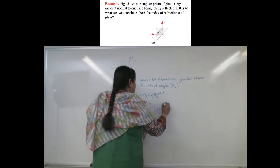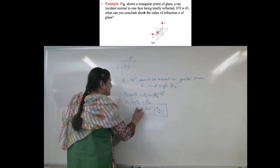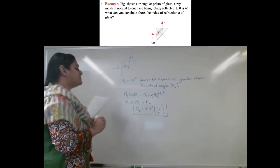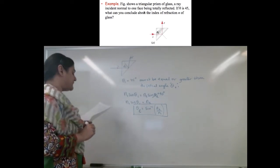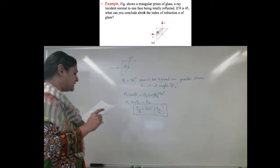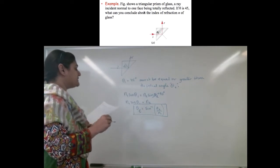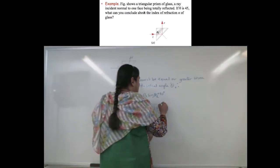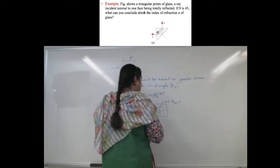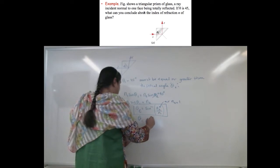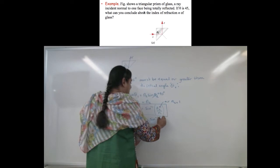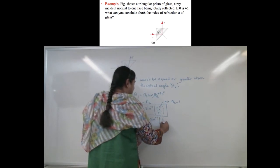Now, what else do I know? This means that my critical angle, theta c, is equal to sine inverse of N2 over N1. This implies if N2 is air, or I know that N2 is air, then N2 equals 1. So, I get theta c equals sine inverse of 1 over N glass.